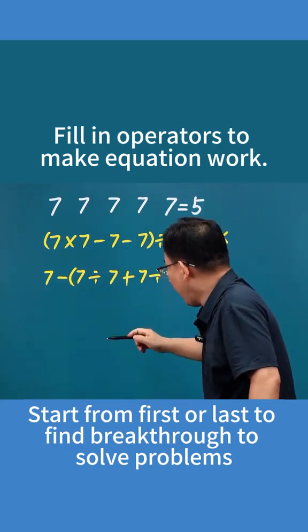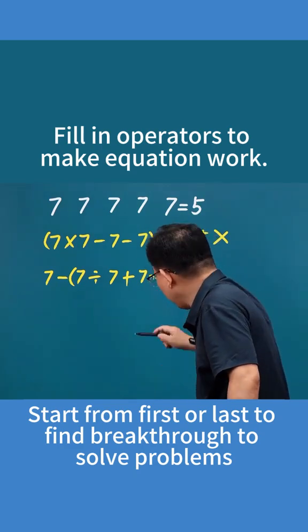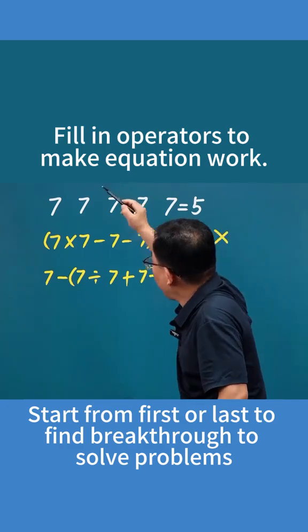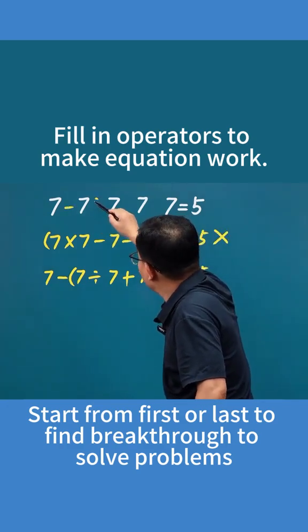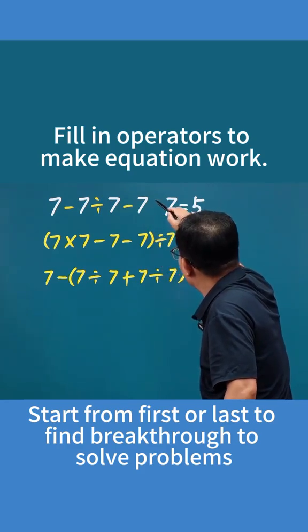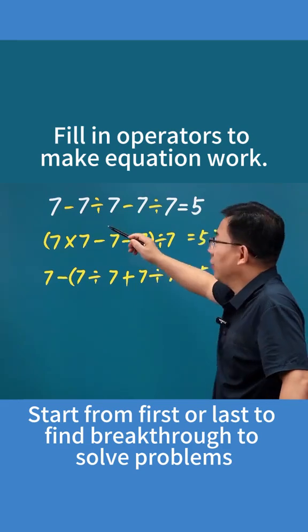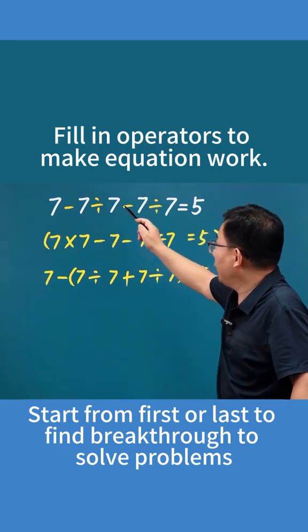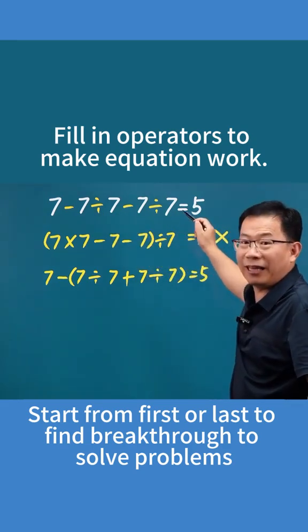But again, we have parentheses. Can we remove these parentheses? Yes, you can remove them, just turn them into operators, so it's 7 minus 7 divided by 7, change the plus sign to a minus sign, and then divide by 7 again. Look, 7 minus 1, then minus 1 again, just happens to equal 5.